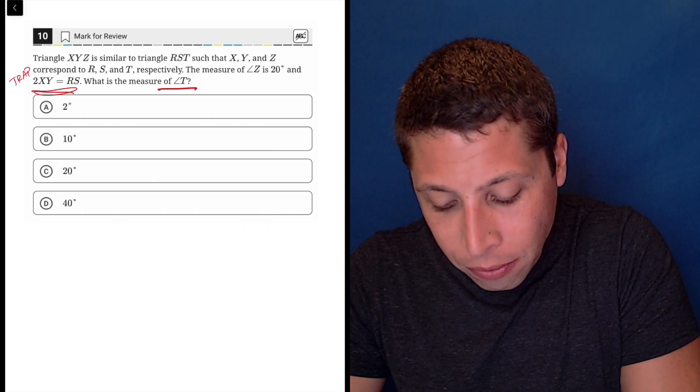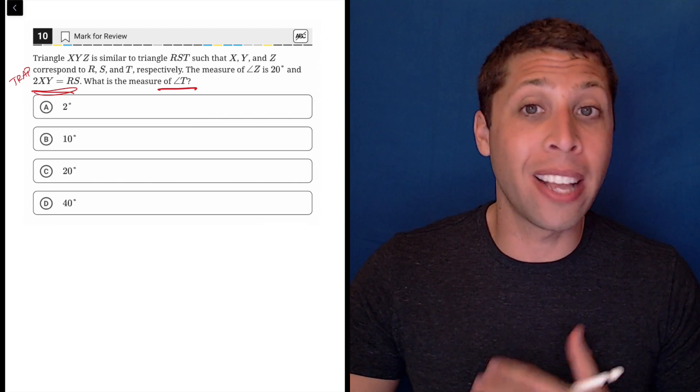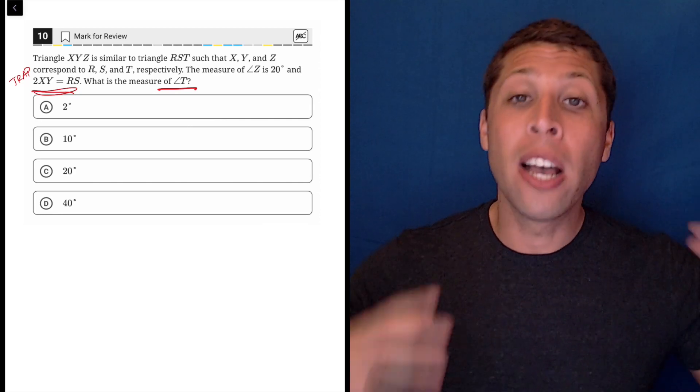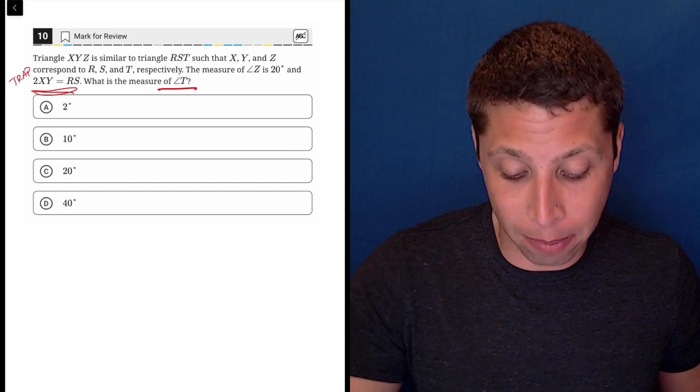This is irrelevant information here because if it's angles that they care about, all we need to know is that no matter how big these triangles get, the angle measures are going to be consistent between them. It's just definitionally what makes them similar.